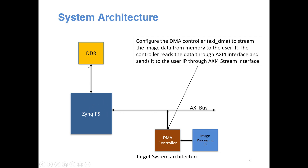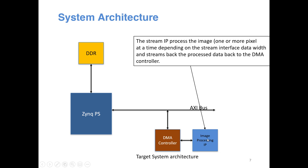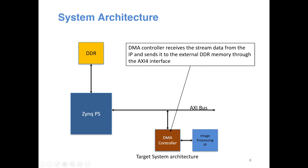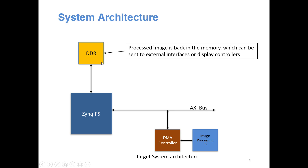We have a driver running on the processor which configures the DMA controller to send image data from external DDR to the IP. Your IP processes the pixels — in our tutorial the data width was 32 bits, meaning you can process 4 pixels in parallel. You can make the data width 8, 16, 32, or 64 to improve performance. After processing, the data is streamed back to the DMA controller, which sends the processed picture back to DDR via the AXI4 interface. Finally, the processed image can be sent to the external world or to a display controller. In our previous tutorial we used the UART interface to send it back to the computer.